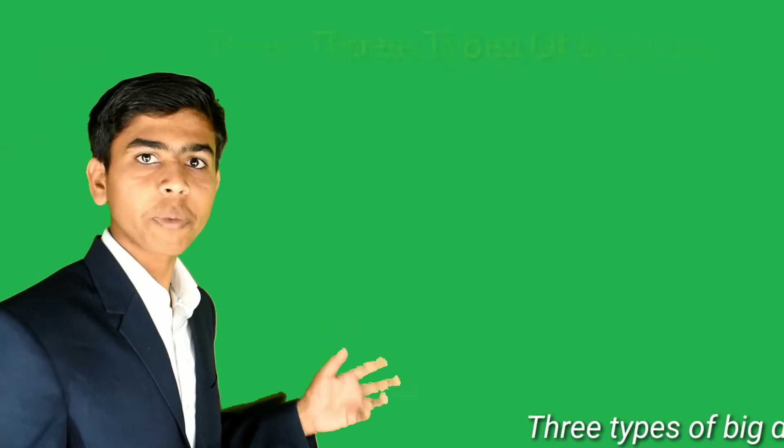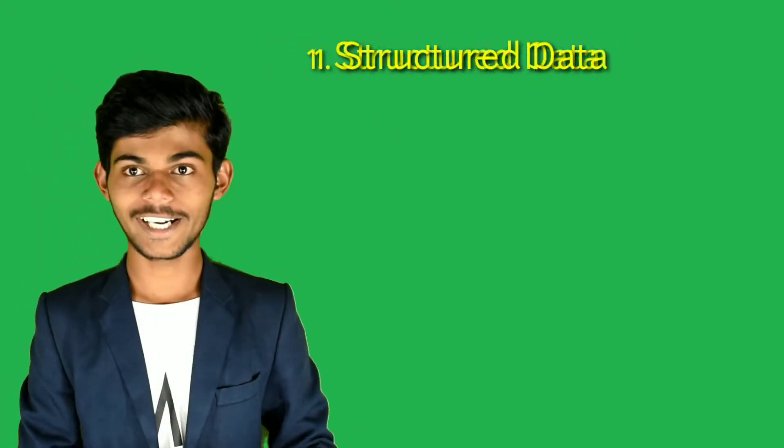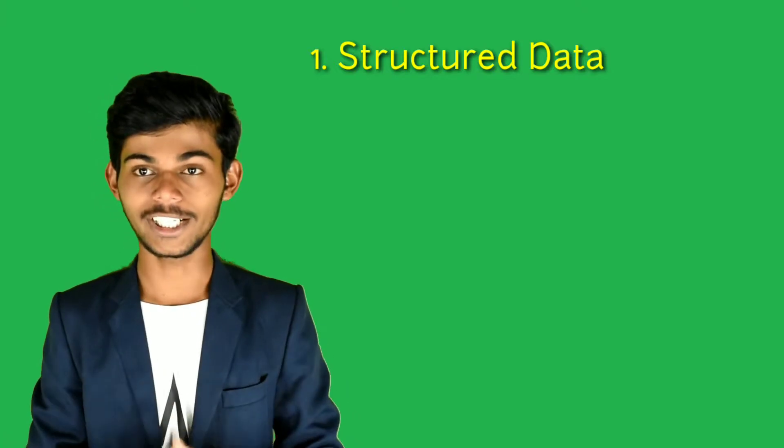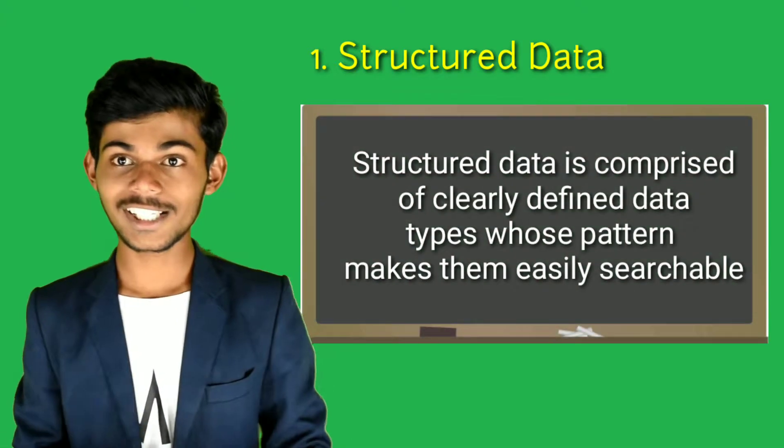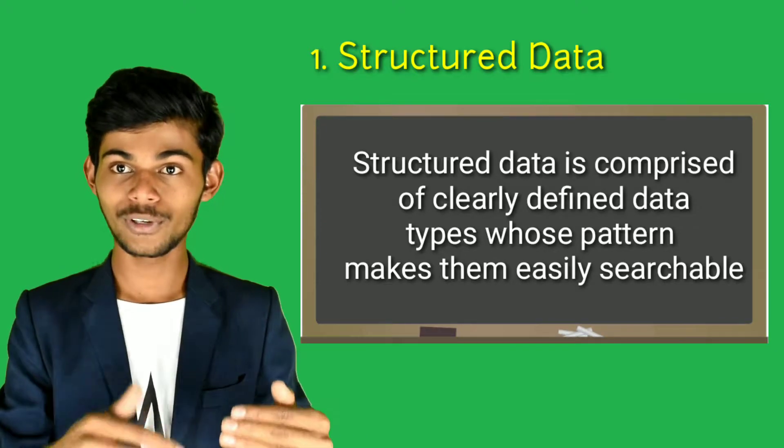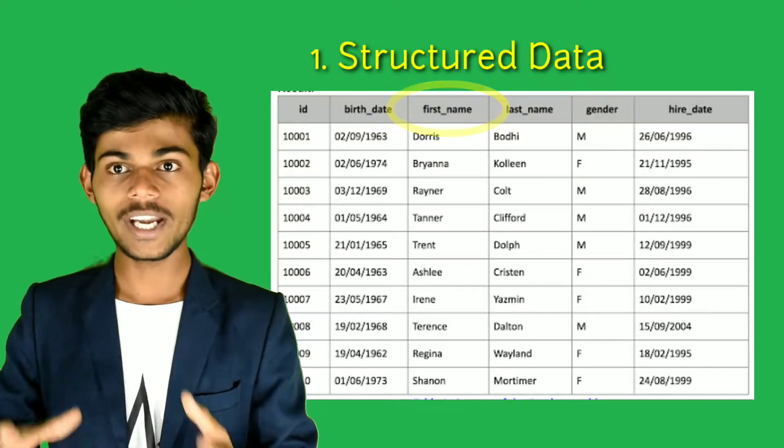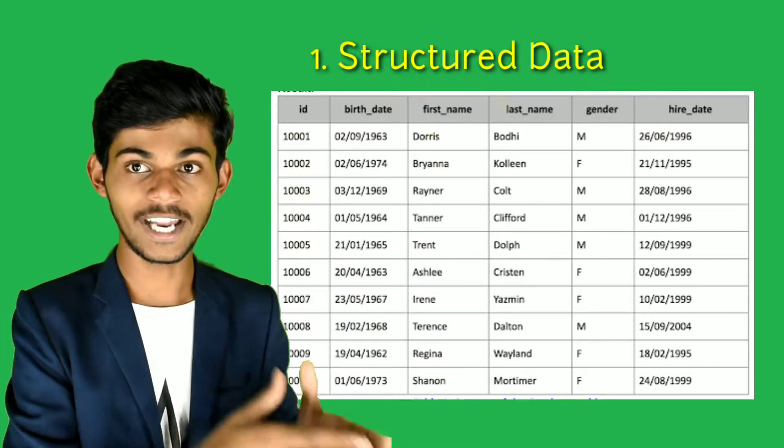Here are the three types of big data: structured data, unstructured data, and semi-structured data. First, we will understand about structured data. What is structured data? Structured data is stored in correct format like an employees table. Name is stored in name section, email will be stored in email section, phone number, address. Every data is stored in correct format in that structured data.